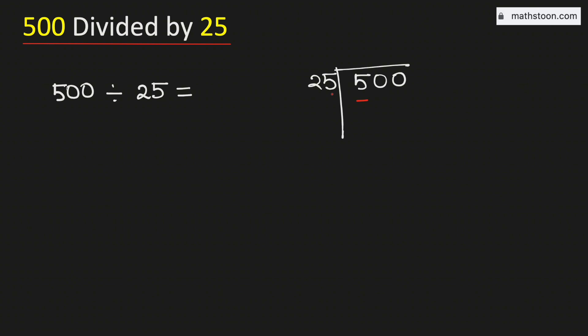See that 5 is less than 25, that's why let's consider the number 50. We know that 25 times 2 is 50, subtract we get 0.